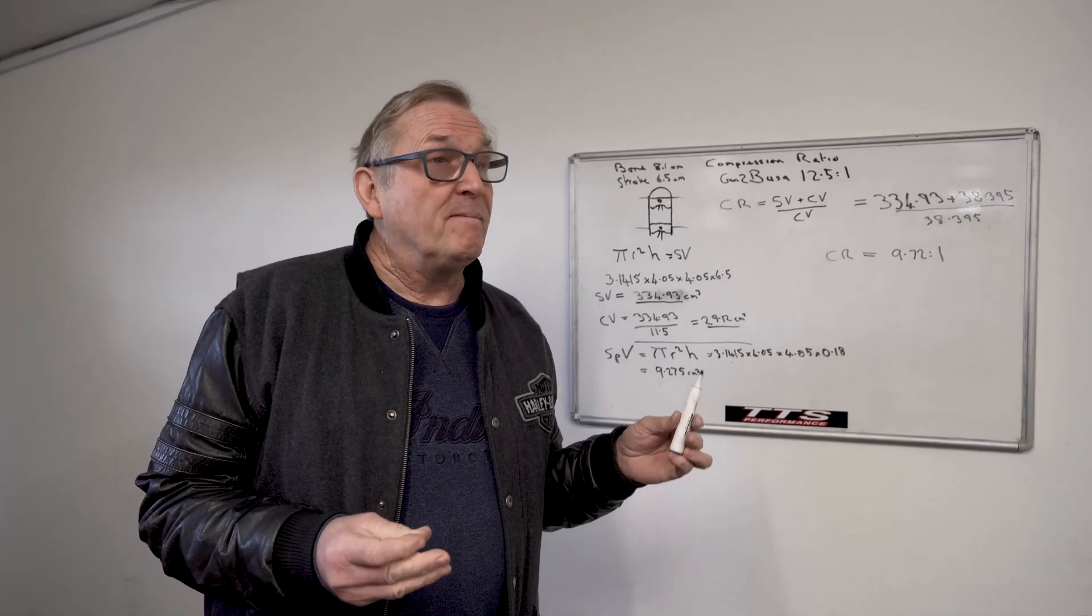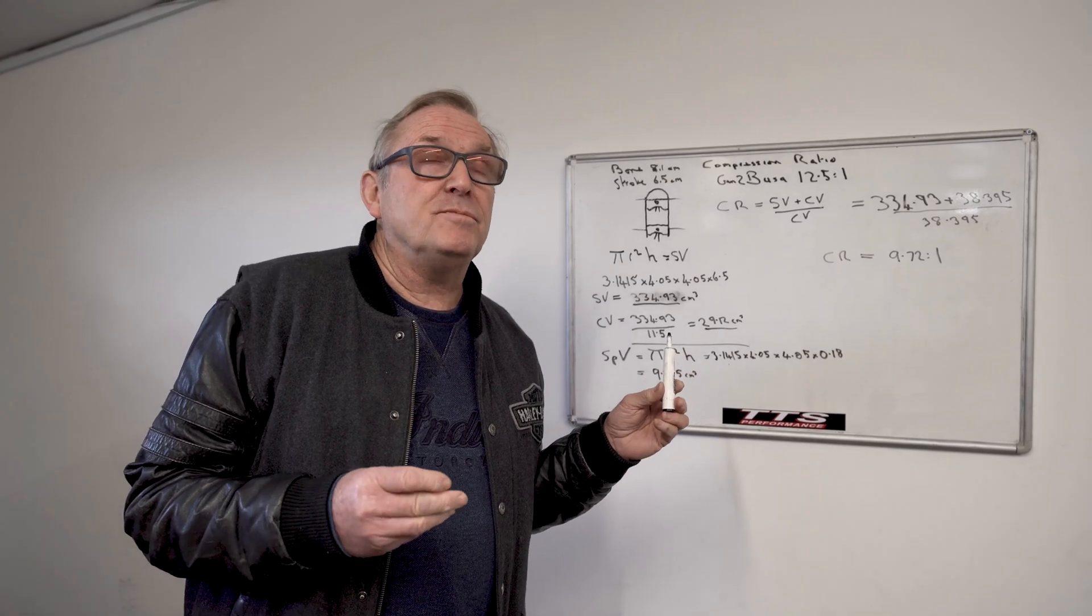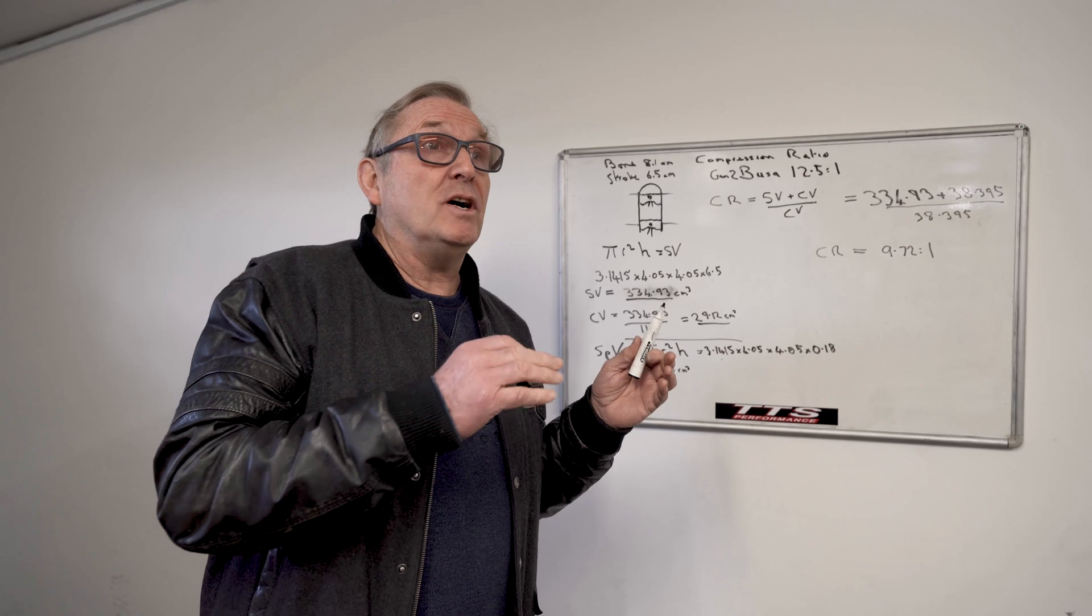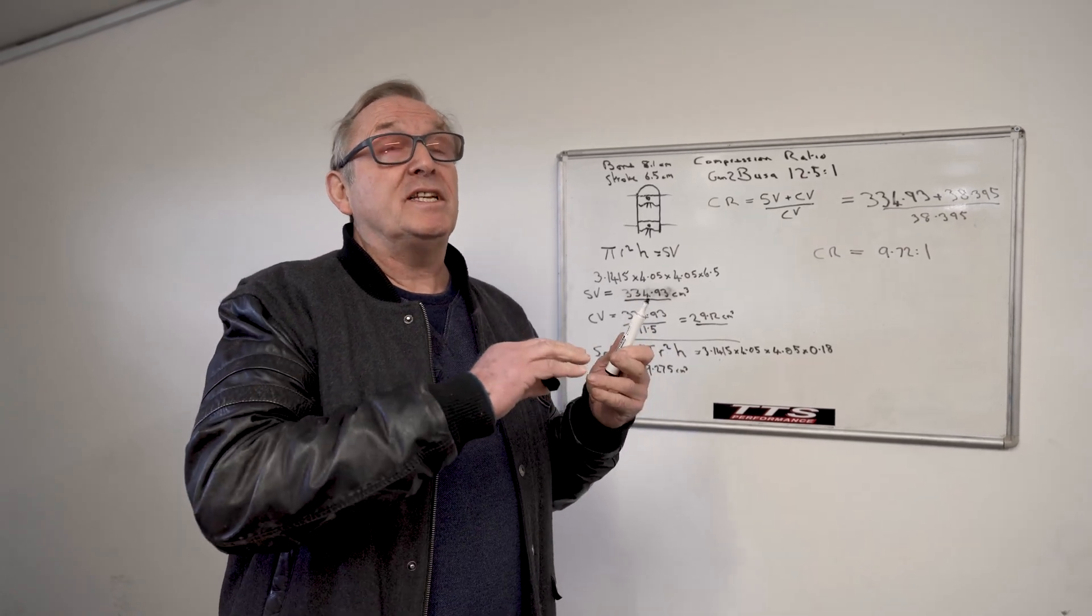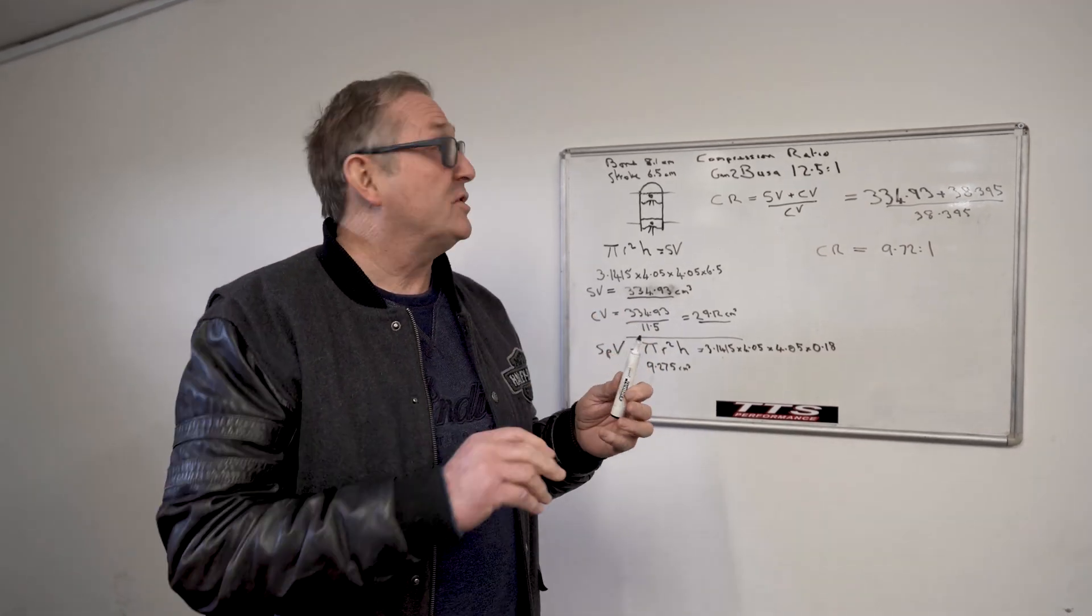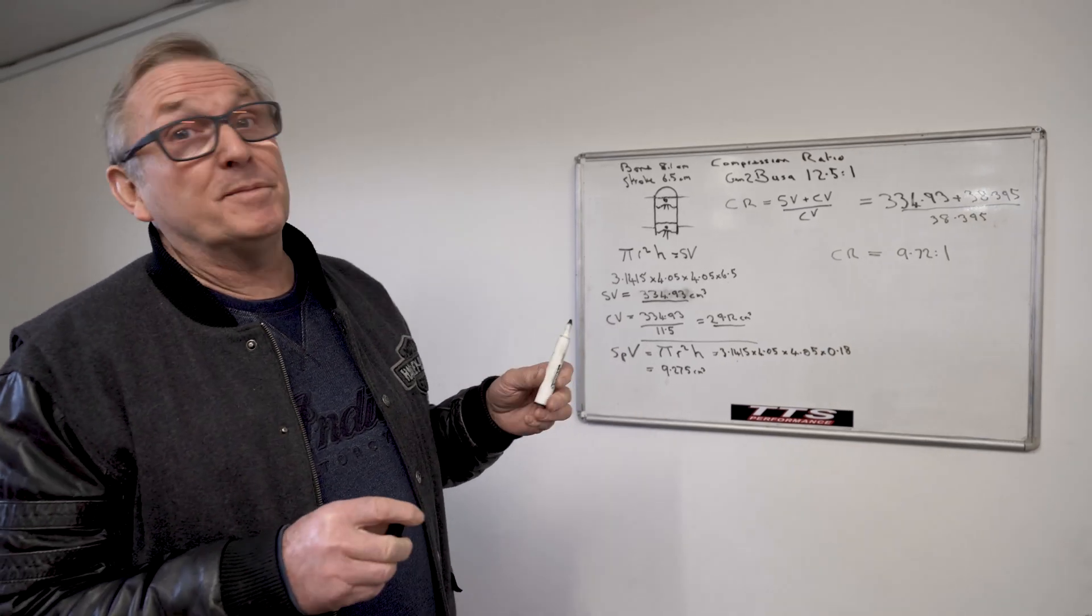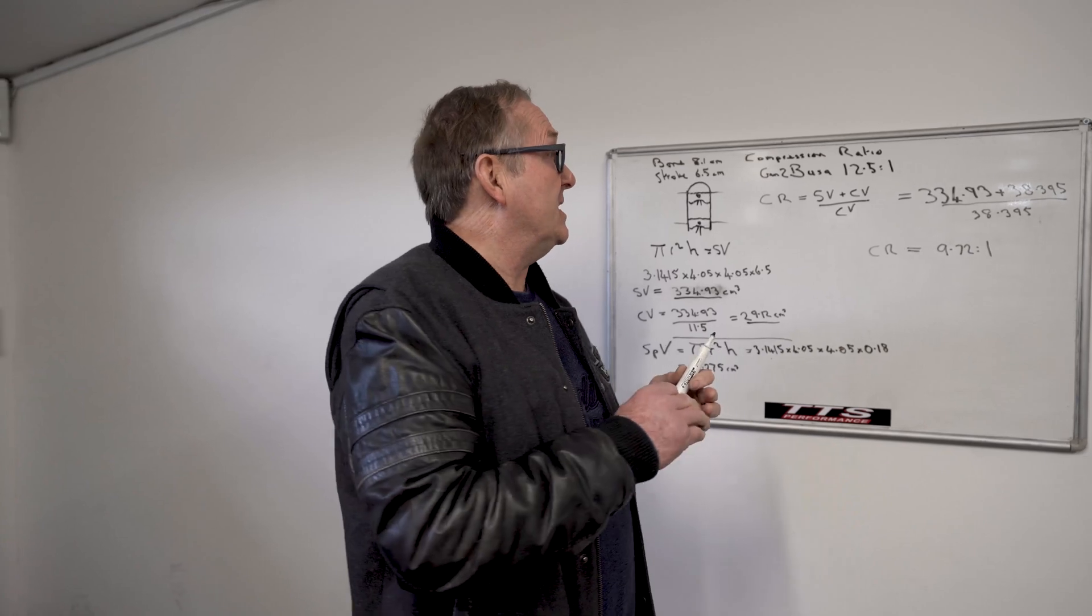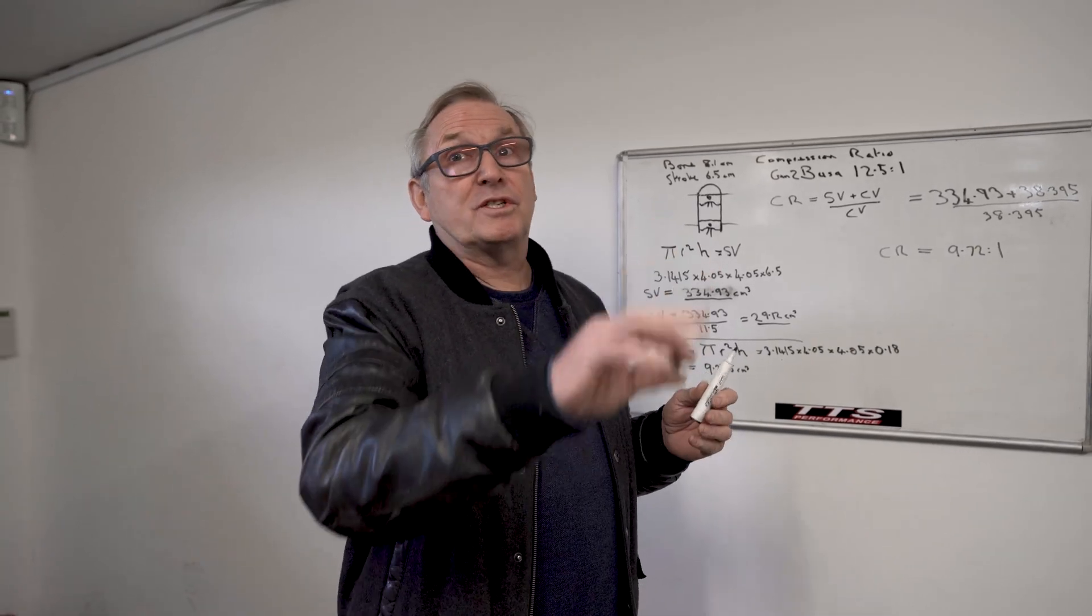And unlike a turbo, when you drop the compression ratio on a turbocharged bike, then until the turbocharger spools up, you're going to have a slower, less powerful engine. With the supercharger, the boost is coming in from idle, so you don't get any lag. You just get an improvement in power all across the board.